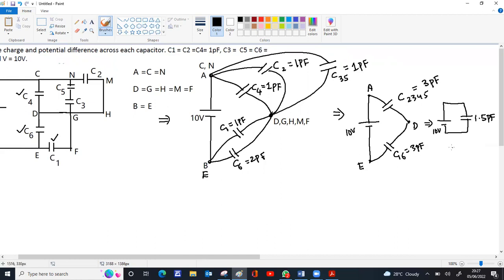This single capacitance will be 3 and 3 in series, will be 1.5, so 10 volt. C total is 1.5 picofarad. Q total will be C total into V, 1.5 picofarad into 10, that will be 15 picocoulomb charge total. Now, C16 and C235 are in series. That means charge across 16 will be same as charge across 2345, which is same as the total charge, because C16 and C2345 are becoming the total capacitance.